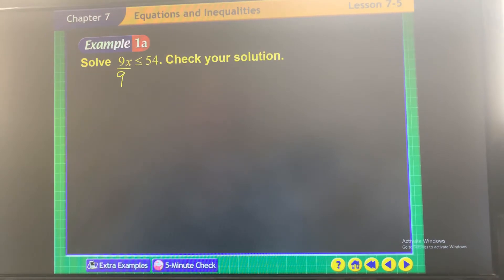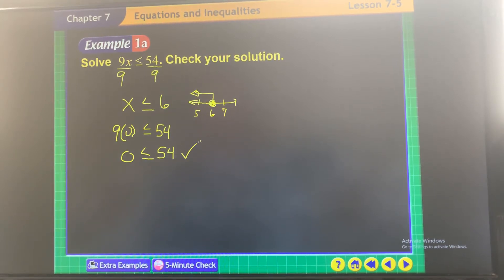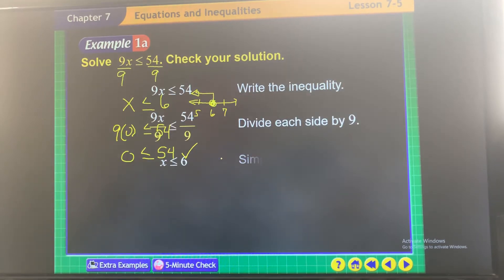And I have x is everything less than or equal to 6. Go ahead and graph it. I always want you to graph it, even when they don't say you need to graph it. I think you need to graph it just so you get a good visual of what it means with an inequality. It includes 6 and it's everything to the left. Okay, and then pick a value less than 6, zero, right? Nine times zero, is it less than or equal to 54? It sure is. Zero is less than or equal to 54, so it checks. When they're positive, it's easy.